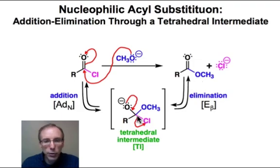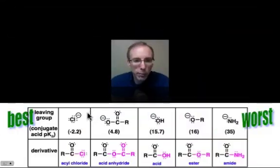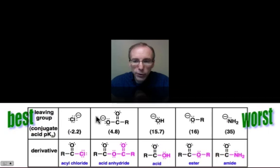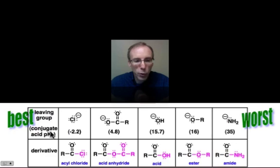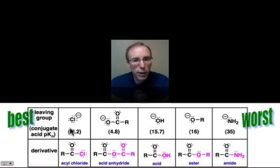The key step is which of these two groups is going to be lost, and that's a decision we can make by examining leaving group ability. The chart at the bottom arranges leaving groups from the best to the worst. Leaving group ability is related to the strength of the base: the weaker the base — in other words, the stronger the conjugate acid — the better the leaving group.